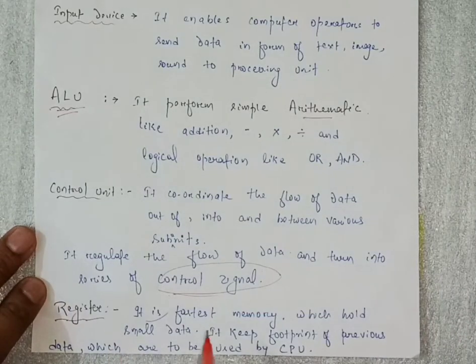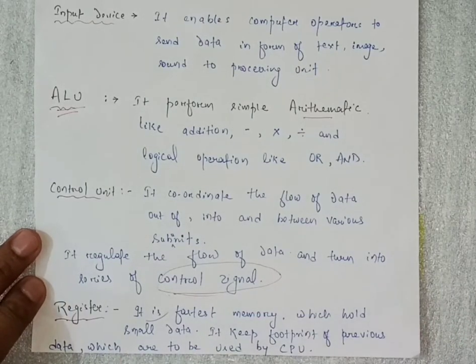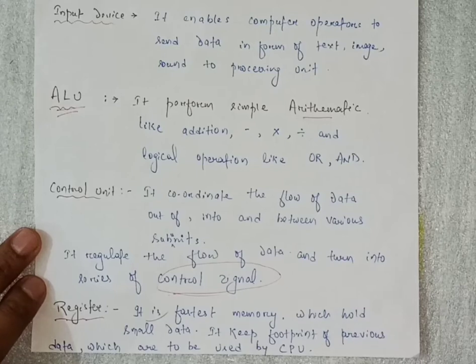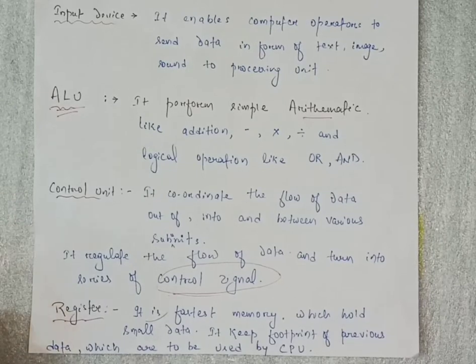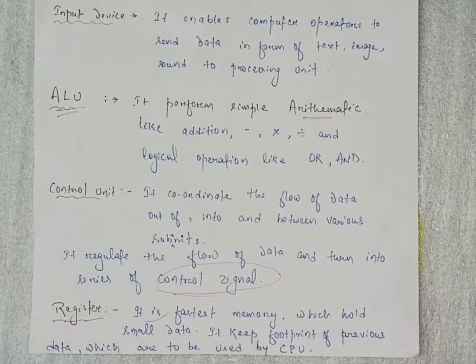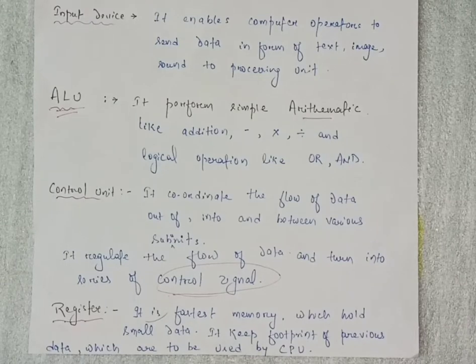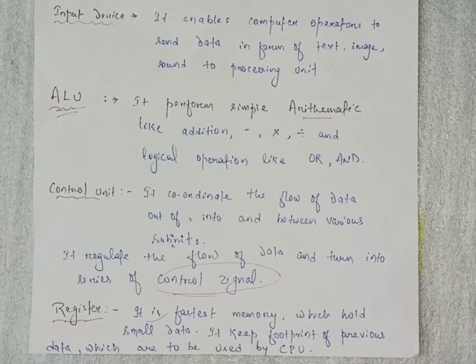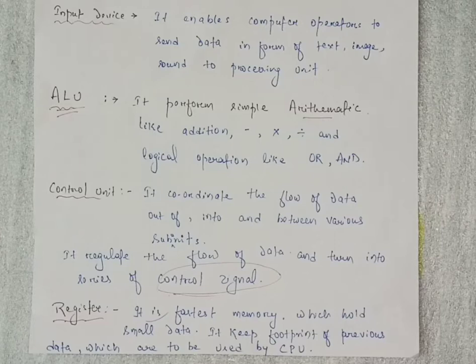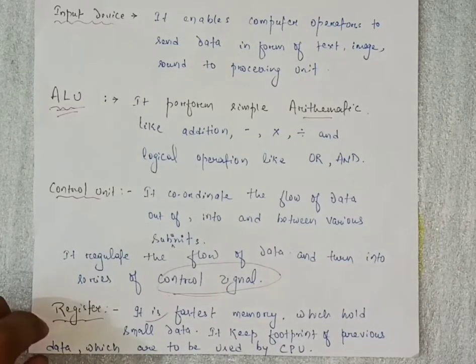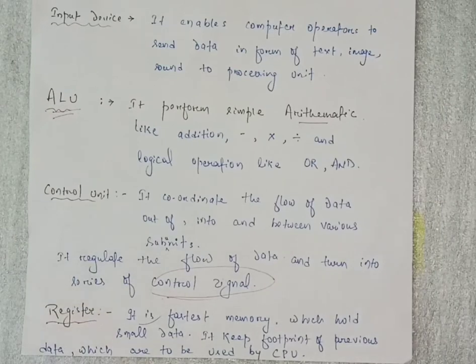What is register? It is the fastest memory. As we know, register is the fastest memory which holds small data only. It will hold and keep the footprint of the previous data - whatever we sent previously, the small parts of that data or the footprint, meaning it will keep the address of the previous one.